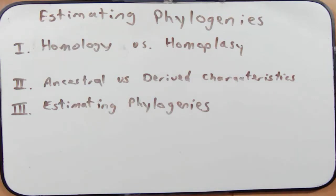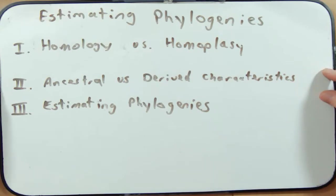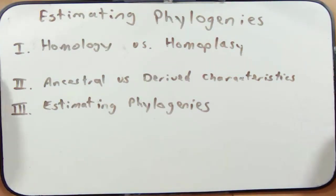Hello and welcome everyone to this video podcast for evolution and diversity. In this podcast we're going to carry on our discussion of phylogenies and we're going to talk about how we can look at a phylogeny and make some estimates. I'd like to first introduce some new terms: homology and homoplasy, and also the difference between ancestral and derived characteristics. That will ultimately lead to our final topic — how we use that information to estimate a phylogeny.